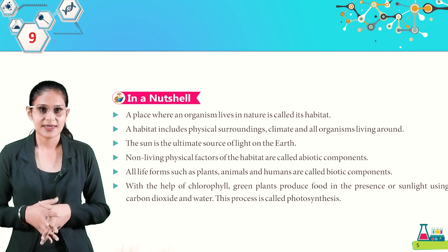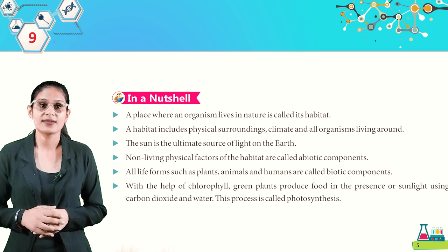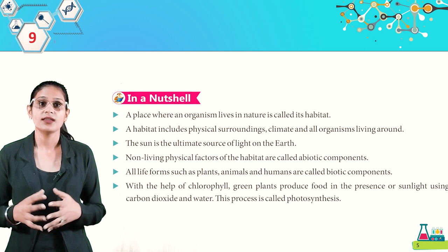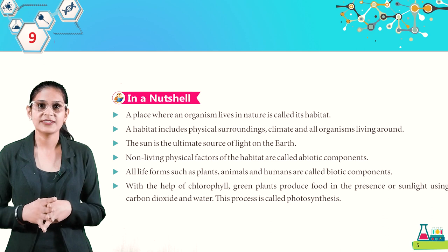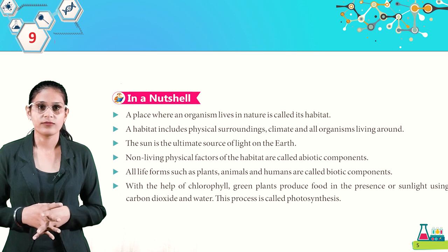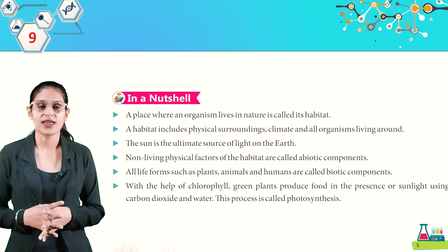In summary: a place where an organism lives in nature is called its habitat. A habitat includes physical surroundings, climate, and all organisms living around. The sun is the ultimate source of light on earth. Non-living physical factors are called abiotic components, while all life forms such as plants, animals, and humans are called biotic components. Through photosynthesis, green plants use chlorophyll, sunlight, carbon dioxide, and water to produce food.